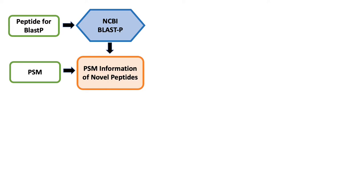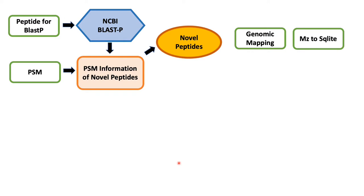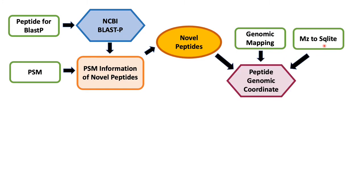Now that we have all the information about these peptides, we perform a filtering step wherein proteoforms which fulfill the criteria of not being present in the existing NCBI repositories are called novel peptides. We can perform visualization of these peptides using our multi-omics visualization platform. It will give you information about the peptide spectra, its localization on the reference protein, and we can view its genomic localization. These novel peptides are then subjected to mapping using the genomic mapping file from the first workflow and the mz2sqlite file from the second workflow. Using these three as inputs, we run the peptide genomic coordinate tool, which provides a BED extension output that can be used as a track on your IGV browser.